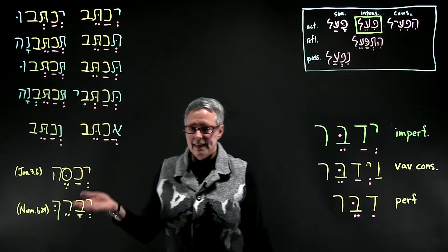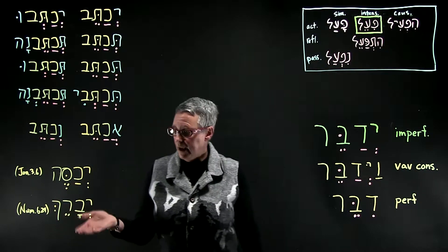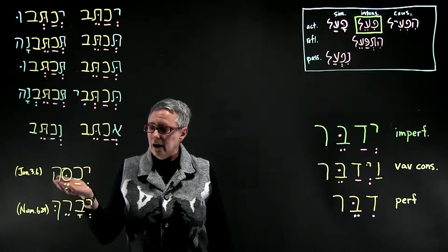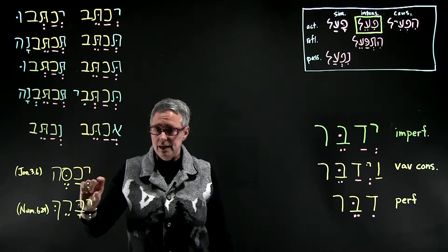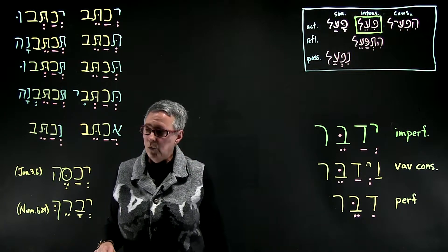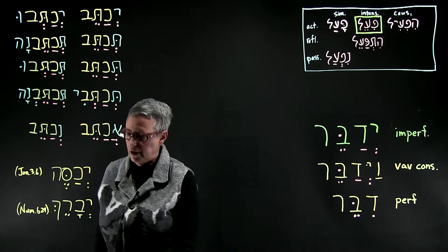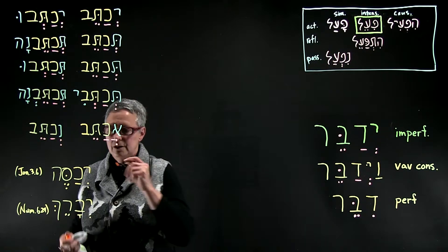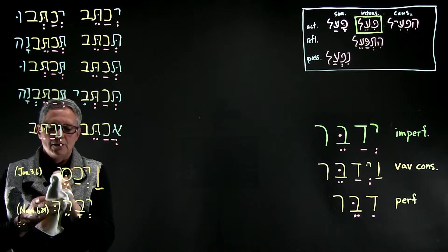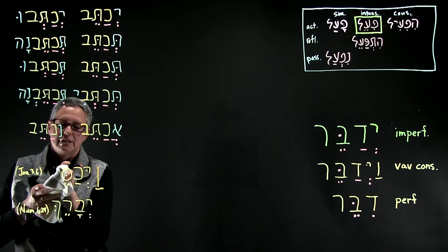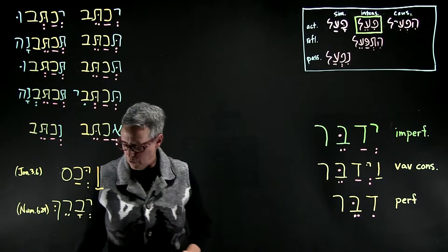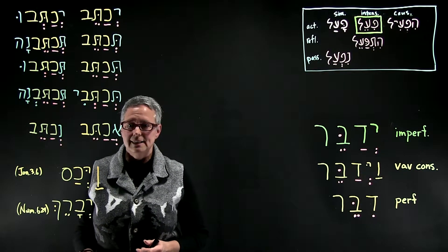Here are a couple of examples that you're already familiar with of Piel imperfects. Yehaseh — you can see here the shva under the prefix, and you can see the dimerol. The form we have encountered in Jonah, however, is the vav consecutive, in which the form has shortened. And because it's the last letter, you don't get to see the dagesh. So you remember vayichas sak.